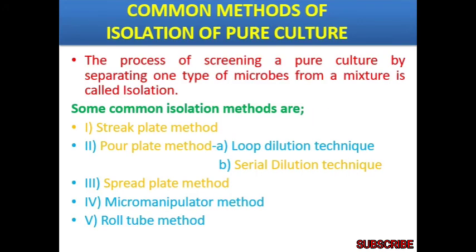The different common methods for isolating pure culture are: streak plate method, pour plate method, spread plate method, micro manipulator method, and roll tube method. In the streak plate method, there are two sub-methods: continuous and discontinuous. In the pour plate method, there are two techniques: loop dilution technique and serial dilution. Then there is spread plate, micro manipulator method, and roll tube method.